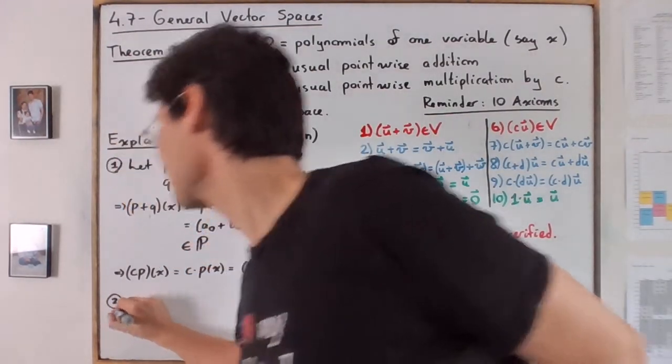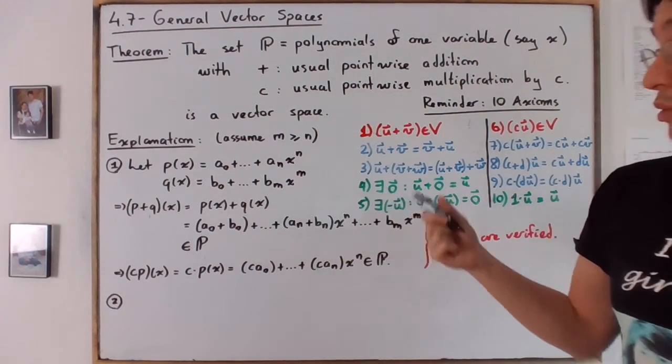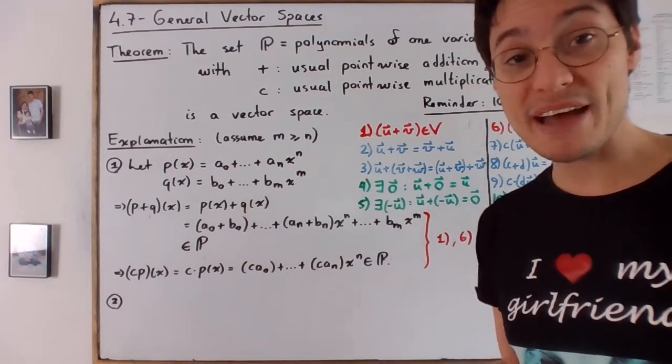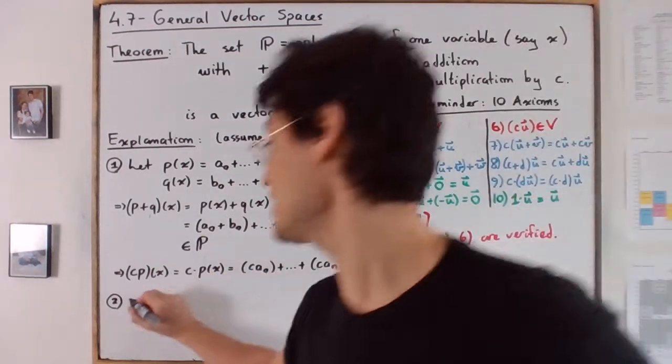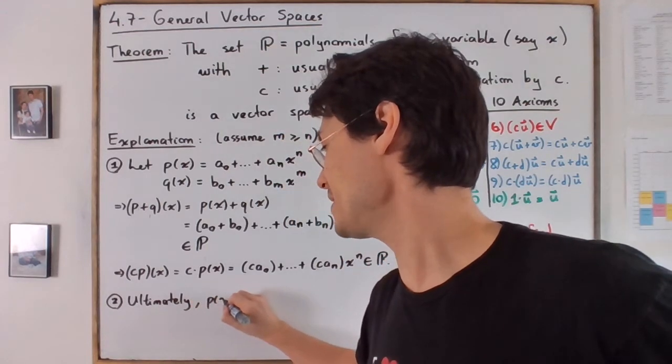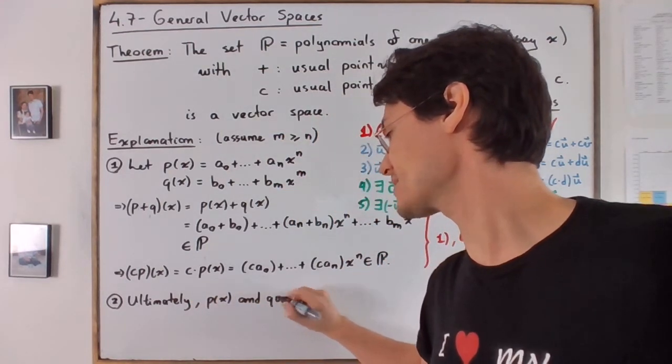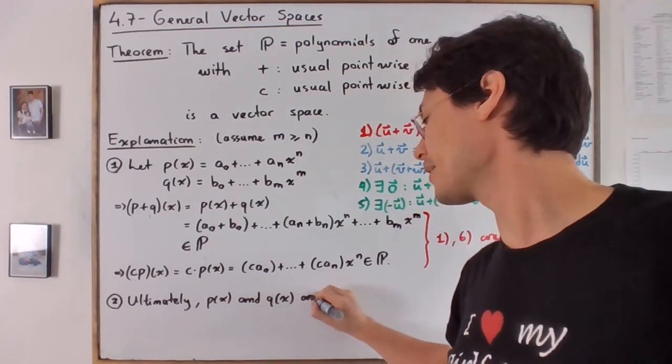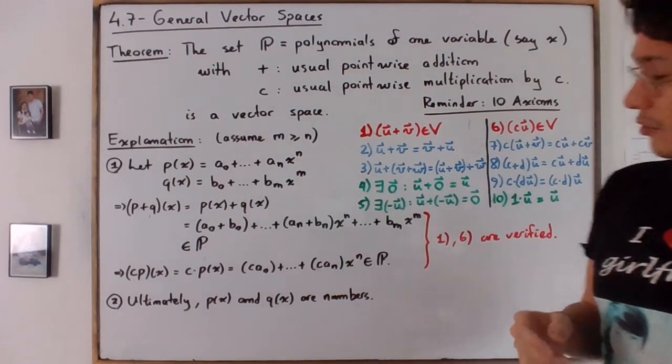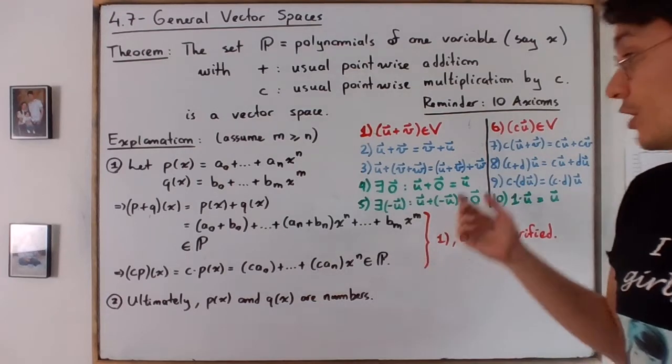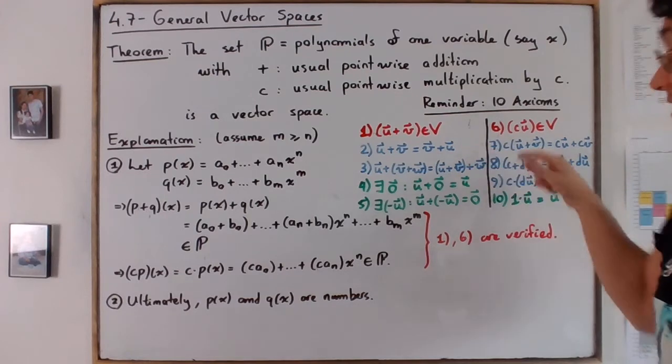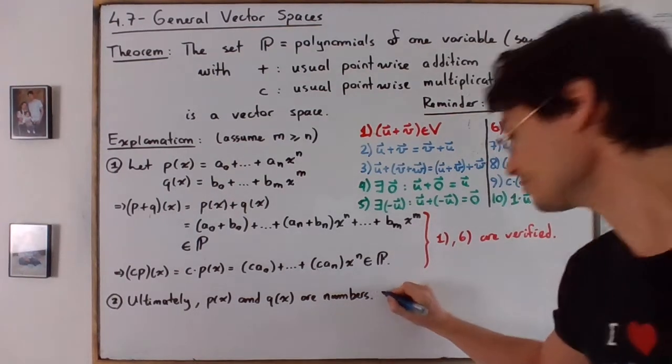So again, step number two. So in the end, what you have to see is that the way we're adding is that we're treating p of x and q of x as numbers. So let's just write that. Ultimately, p of x and q of x are numbers. So in other words, numbers, as you know, r is a vector space, certainly. So it does satisfy all the algebraic properties.